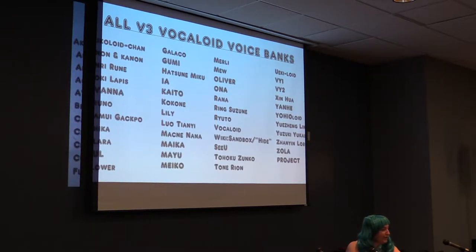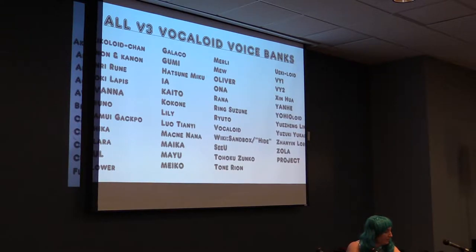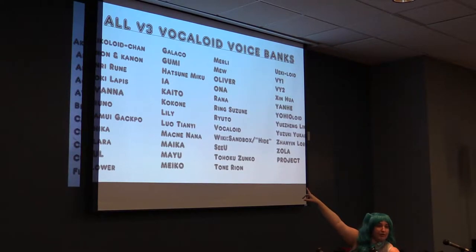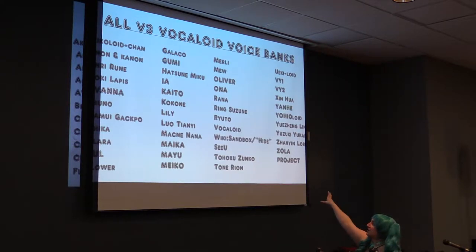These are all the V3 Vocaloid voice banks. Kaito got a V3, and I think pretty much all the Krypton Vocaloids got a V3. IA, right above Kaito, was released in V3 — we'll talk about her a little bit later. You can see Gumi got a new release, and there are a lot more now.